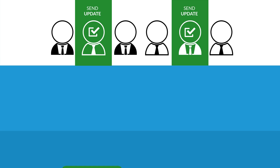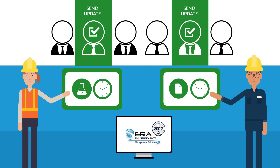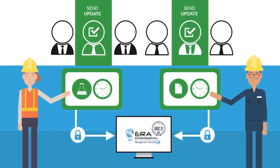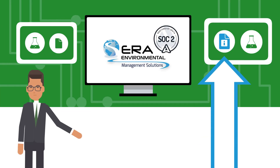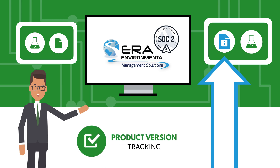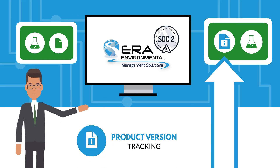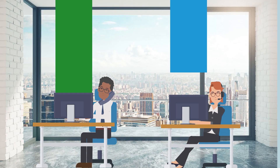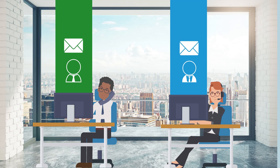The vendor specifies the products and timeframe for the update. Subsequently, the data is securely transferred to ERA's environmental database, undergoing comparison with prior batch data to pinpoint changes. Product version tracking retains the identified data for the relevant version.